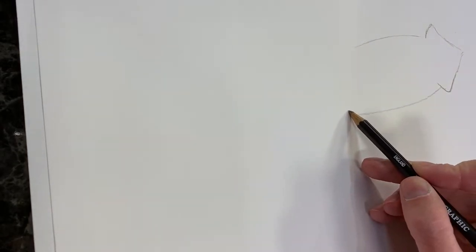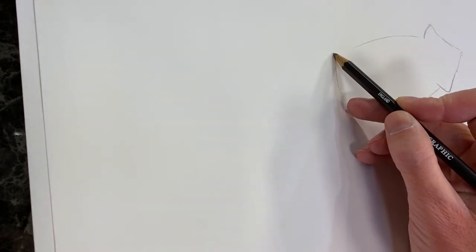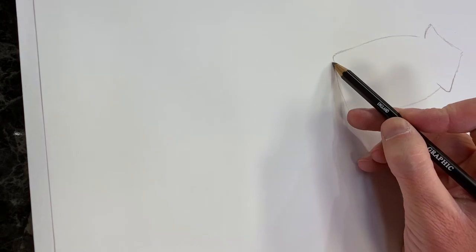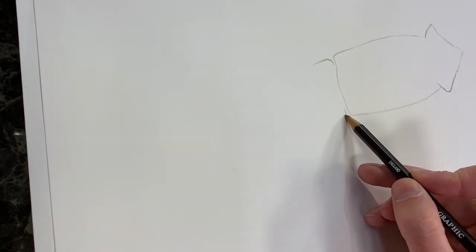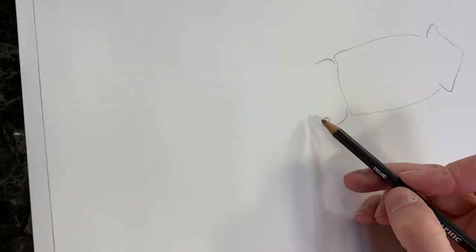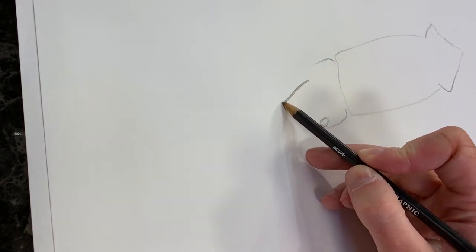And then we're going to make a straight line. And now we'll make this is where the eye would be right about here. And then we'll have tentacles start coming off.